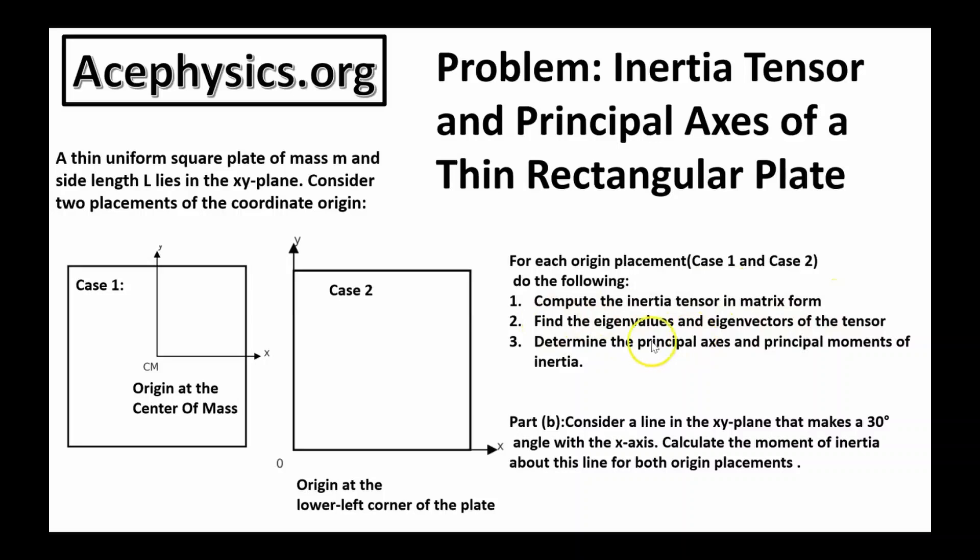Compute the inertia tensor in matrix form. Find the eigenvalues and eigenvectors of the tensor. Determine the principal axes and principal moments of inertia. And then part b, consider a line in the XY plane that makes a 30-degree angle with the x-axis. Calculate the moment of inertia about this line for both origin placements.